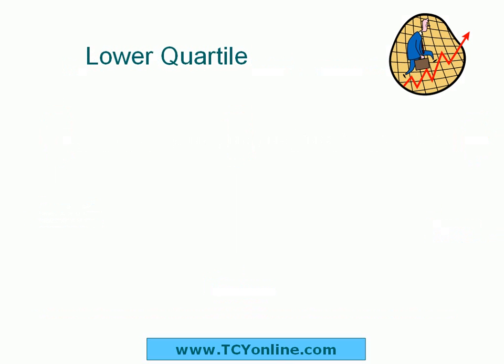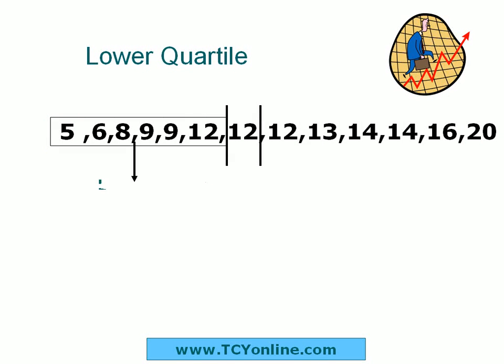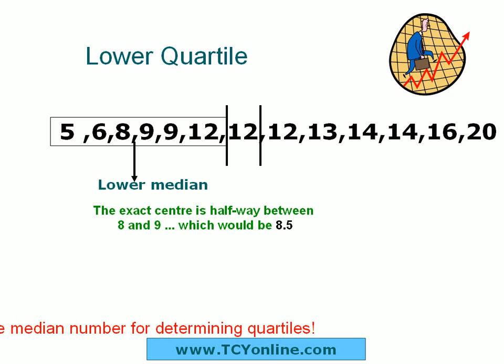The next step is to find the median of the lower set of values, which will be called the lower median or lower quartile. Here the exact center is basically halfway between 8 and 9, which would be 8.5. So we can say that the lower quartile of this set of data is 8.5.